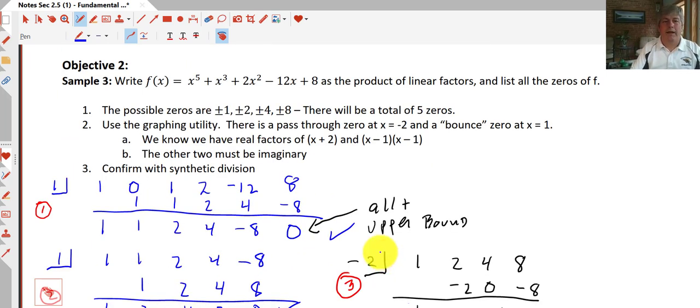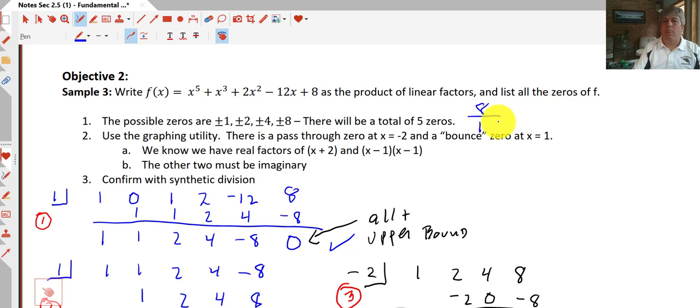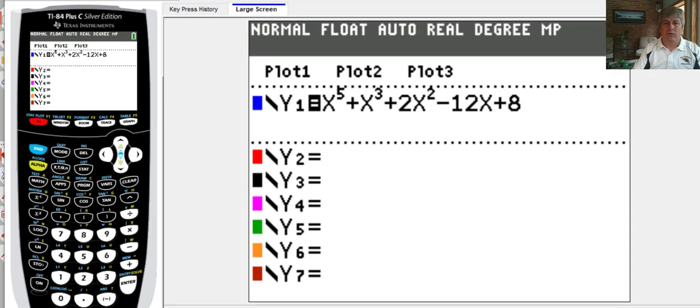Objective two, we were going to write our function, x to the fifth plus x cubed plus 2x squared minus 12x plus 8, as a product of linear factors, and list all the zeros of f. Because we have 8 over 1, our possible zeros are plus or minus 1, plus or minus 2, plus or minus 4, and plus or minus 8, using all the factors of 8 and 1. We know, because we have x to the fifth, that we will have a total of five zeros. That's a lot of options, so we'll grab our graphing utility, we'll input the function, and see what we get.